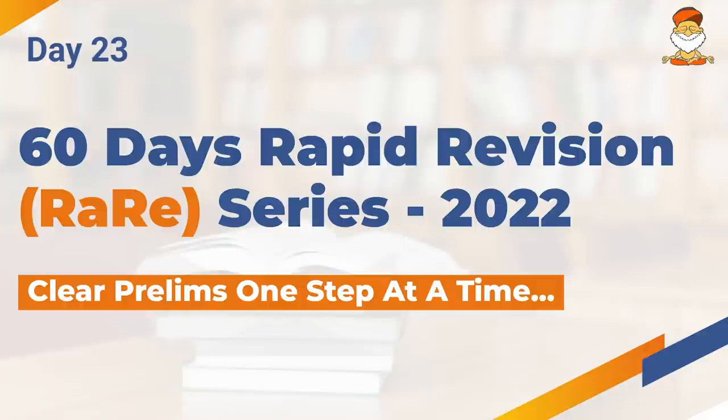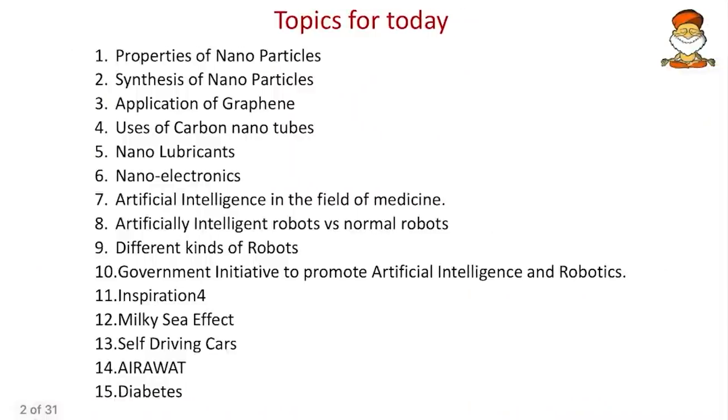Hello everyone, welcome to IAS Baba's 60 Days Rapid Revision Series for Prelims 2022. This is Day 23 and the topic we have is science and tech — nanotechnology and robotics.